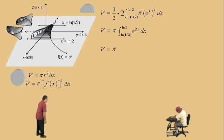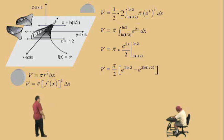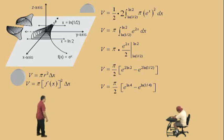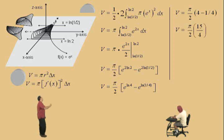Now we have to integrate e to the 2x, which at this point of the class you should be able to integrate by kung fu: e to the 2x over 2. Or you can use a u-substitution if you have to. Don't forget about your limits of integration. Substituting in, we get e to the 2·natural log of 2 minus e to the 2·natural log of 1/2. You can square the argument: 2·ln(2) becomes ln(4), and 2·ln(1/2) becomes ln(1/4). So e to the natural log of 4 is 4, and e to the natural log of 1/4 is 1/4. Then 4 minus 1/4: 4 is 16/4, subtract 1/4 gives 15/4.